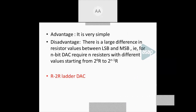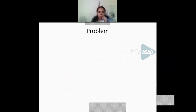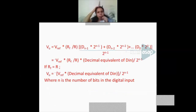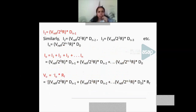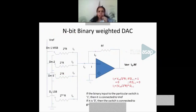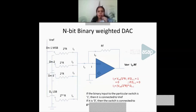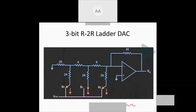The disadvantage of the binary-weighted DAC is that for an N-bit design, resistor values range from R up to 2^(N-1)R. This wide range of values is practically difficult to achieve. You cannot substitute one value for another — for example, you cannot use 2^1.5R instead of 2²R. The availability of such a wide range is the main practical difficulty.